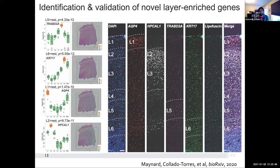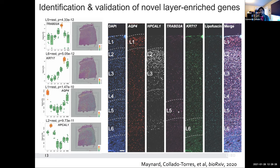We also found new marker genes, such as TRABD2A for layer five. The way we validated these new marker genes was using RNAscope — imaging where you take images of a slice of tissue. We took it from the next slice on the same tissue block. You immunostain for these different genes — you can't do it for every single gene; the RNAscope company gives you a list of genes they have markers for. Here we can see TRABD2A has higher intensity points in the image on what we think is layer five, based on the density of the cells.